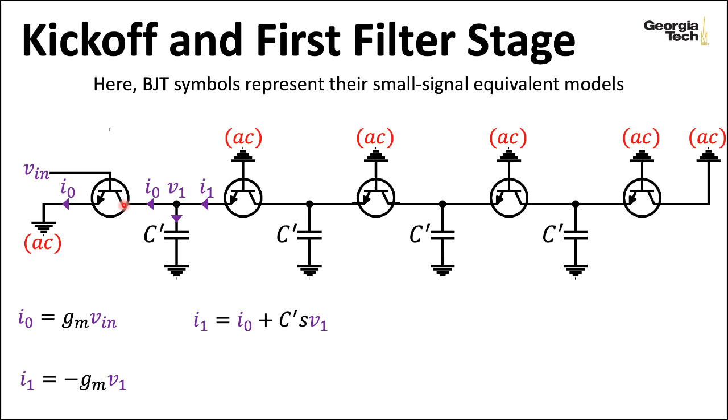Because this is going to be whatever the voltage is divided by the impedance of this element here, which is 1 over C prime S, which is going to give C prime S. To go a little further here, let's see if we can substitute in something for V1. We're just rearranging this expression relating V1 to I1. I get that V1 equals minus I1 over my transconductance gain. And I can just plug that right in here.